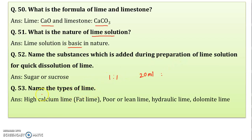Name the types of lime. There are various types: high calcium lime, also called fat lime; poor lime or lean lime; hydraulic lime; and dolomite lime. Hydraulic lime has further three subtypes: feebly hydraulic and eminently hydraulic.